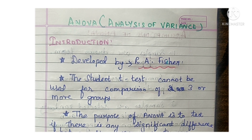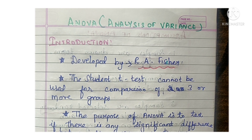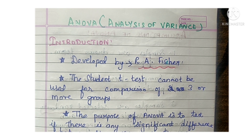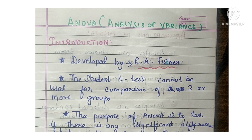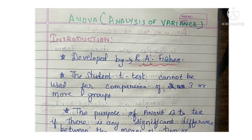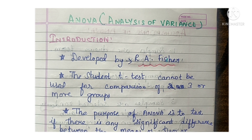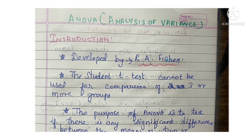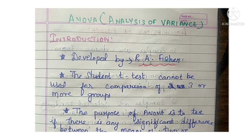The student t-test cannot be used for comparison of 3 or more groups. If there are 2 groups you can compare using the student t-test, but if there are 3 or more groups, the t-test is not applicable. In that case you have to use a special type of F-distribution test called ANOVA. ANOVA is also one type of F-test. We have posted videos on t-test and F-test — you can watch our channel playlist for more.